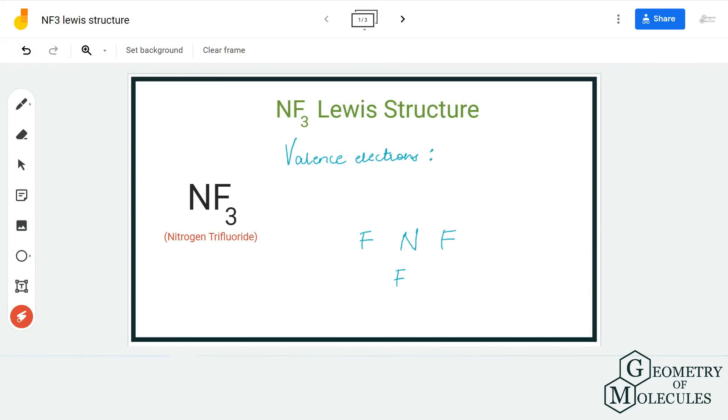Hi guys, welcome back to our channel. In today's video we are going to help you determine the Lewis structure for NF3 molecule. It's a chemical formula for nitrogen trifluoride, and to determine its Lewis structure we are first going to look at the total number of valence electrons for this molecule.